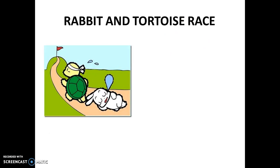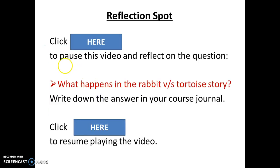The first example is about the rabbit and the tortoise race. I am sure you must have heard about this race when you were small. I want you to take a minute or so and reflect about this story. You can pause this video by clicking here and answer this question. What happens in the rabbit versus tortoise story? Write down your answer in your course journal. Click here to resume playing the video once you are done.